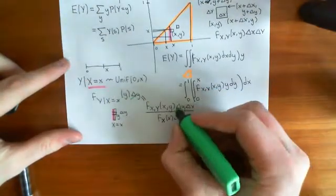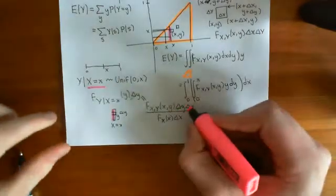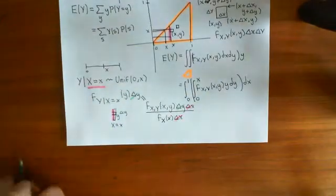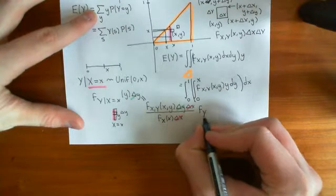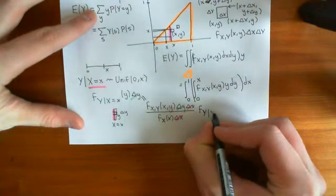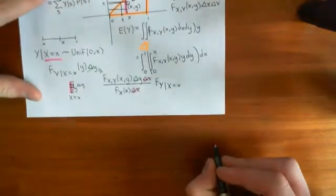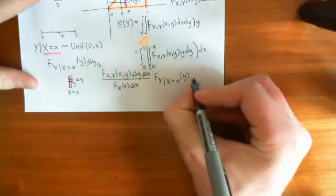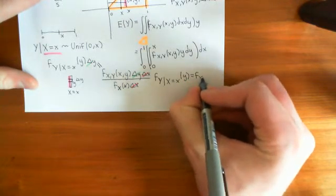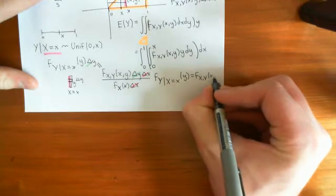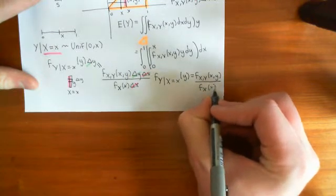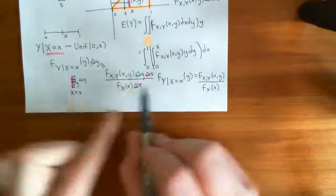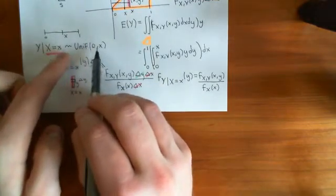Canceling gives us the usual formula for getting conditional probability density functions from the non-conditional ones. If we want the conditional probability density function of big Y given that big X equals little x, evaluated at little y, then that's going to be the joint PDF of X and Y evaluated at little x, little y, divided by the marginal PDF of big X evaluated at little x. Now we use the fact that we know this, because it's uniformly distributed on 0 to x — so what should its probability density function be? Let's discuss that on our next page.